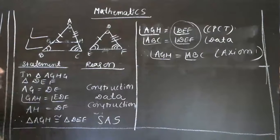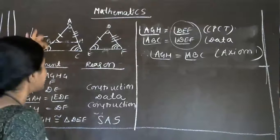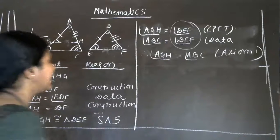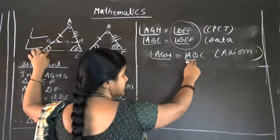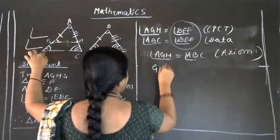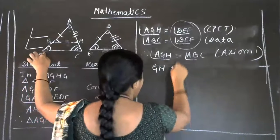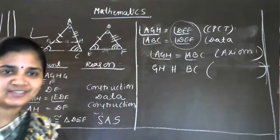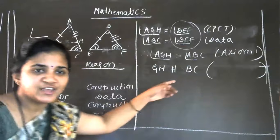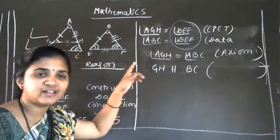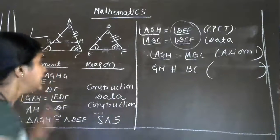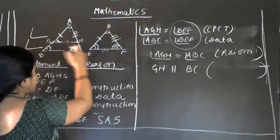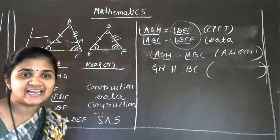Since AGH equals ABC, these are corresponding angles. Corresponding angles are equal only when the lines are parallel. So we can take GH is parallel to BC. If the corresponding angles are equal, then the lines are parallel. So in triangle ABC, GH line is parallel to BC line.